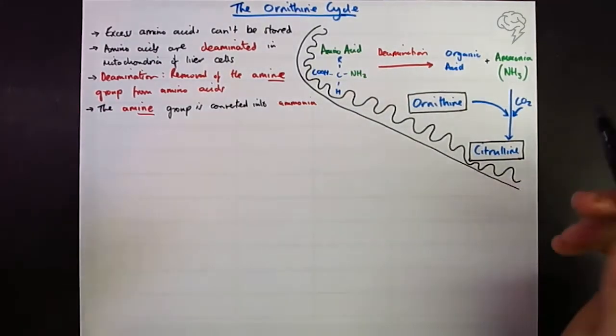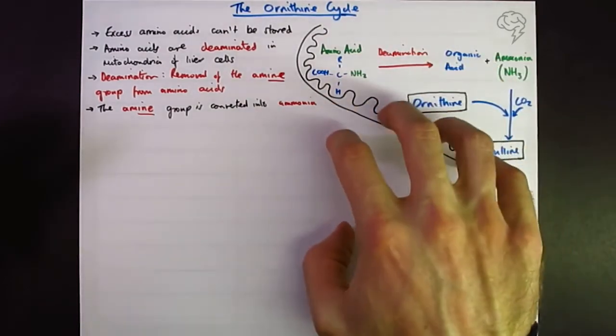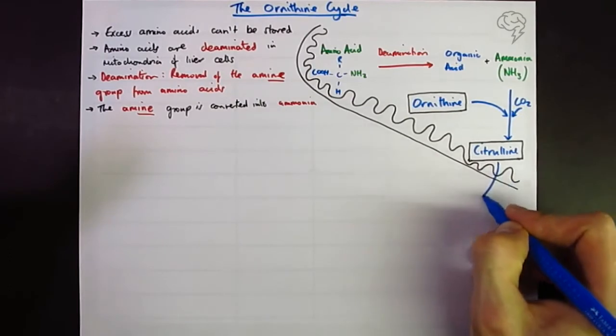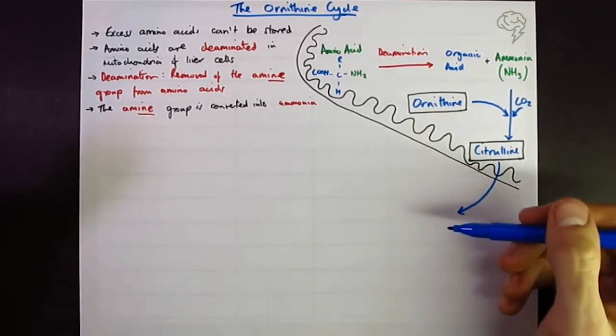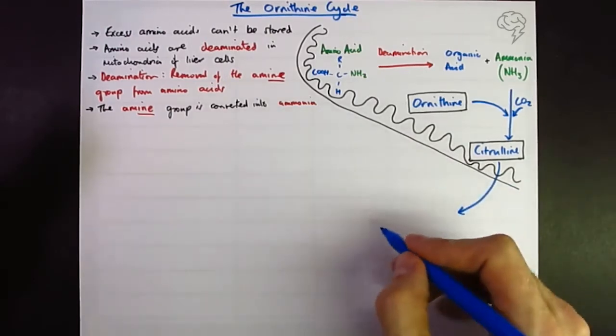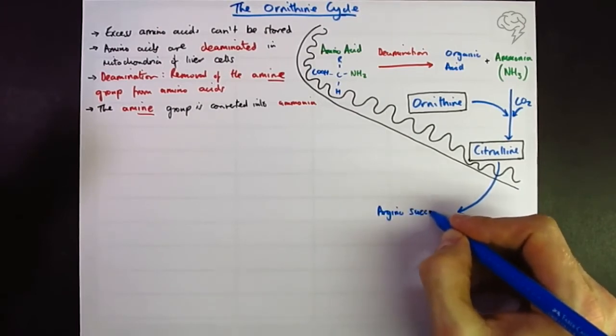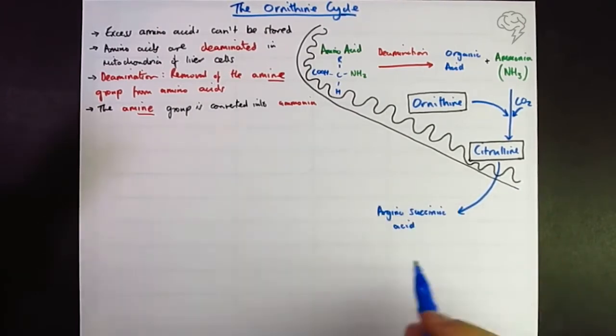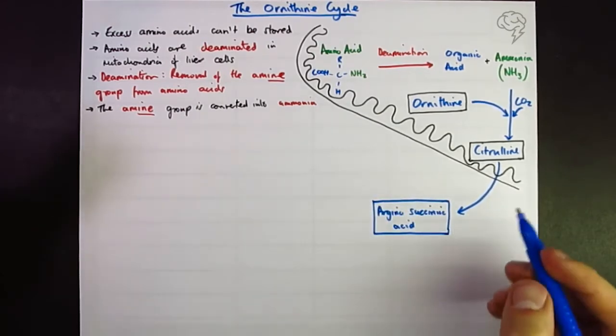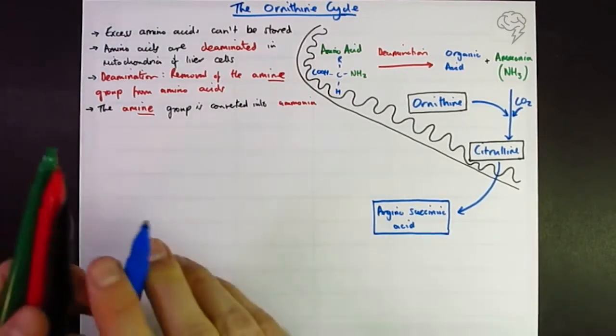I'm just going to draw my mitochondrion pretty small just like that. What next on this cycle? I'll draw the cycle now and then put the important notes extracted from past papers down here. Citrulline, this next compound, has two names. In the exam papers I've seen it's generally called arginosuccinic acid.